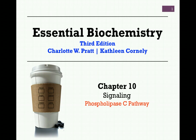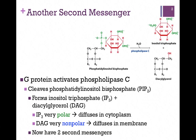We're continuing our studies in Chapter 10 on signaling, and our subject for this lesson is the phospholipase C pathway. This is another type of second messenger system. We still have a G-protein coupled receptor that will interact and activate a G-protein, except in this case, instead of the G-protein interacting with adenylate cyclase to make its second messenger, it's going to interact and activate another enzyme, phospholipase C.